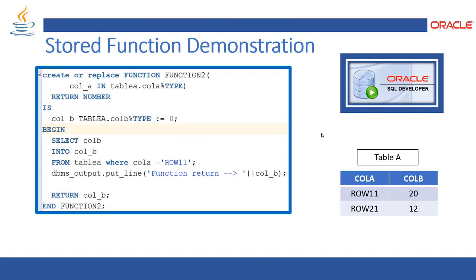A stored function is a piece of PLSQL code used to get a value, perform some functionality, and return some values. The syntax is: create or replace function, then give the function name and the IN parameter. The percentage type will sync up with your real database table and assign that variable the particular data type. The return type — number — is mandatory with a function because functions always return values. We begin the code, initialize any variable if needed, then get the value from the column and table, and this is how it returns a single value.